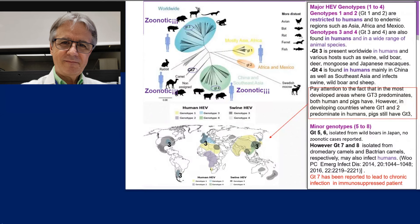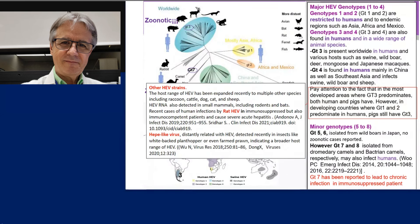There are other hepatitis E virus strains. The host range has been expanded recently with several variants of hepatitis E virus antibody found in different animal species, including raccoons, cattle, dogs, cats, and sheep, but also small mammals including rodents and bats. Recent cases of human infection by rat hepatitis E virus have been associated with severe hepatitis in humans. There are additional epi-like viruses very distantly related to hepatitis E virus, even in insects, seeds, and even prawns. Predictably, the whole range of hepatitis E virus will continue to expand over the years, providing better understanding of the origin and evolution of this very important infection.